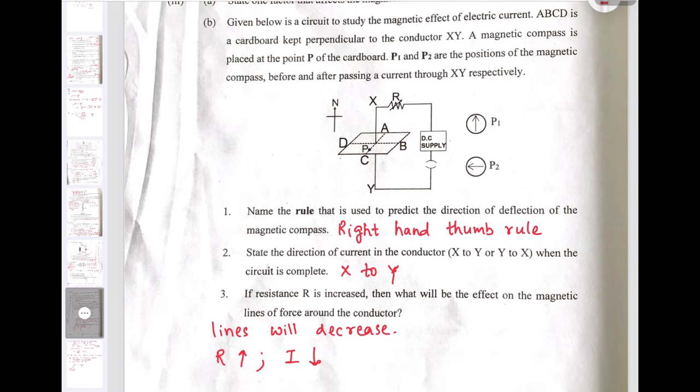Next question: State the direction of current in the conductor, x to y or y to x. The magnetic needle is placed at point P and when the current flows, the needle deflects in this particular direction. If you use right hand thumb rule, you will be easily able to state that the current flows from x to y. So when current flows in downward direction, then only the needle placed at point P will deflect in a given situation or in a given direction.